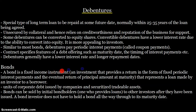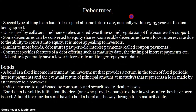A bond represents a loan made by an investor to a borrower, but it also functions as an income instrument — it's an investment. Bonds can also be referred to as units of corporate debt issued by companies and securitised as tradable assets, meaning you can sell them to other people. So someone who holds a debenture doesn't have to wait the full 25-year period — they can sell it to another party.